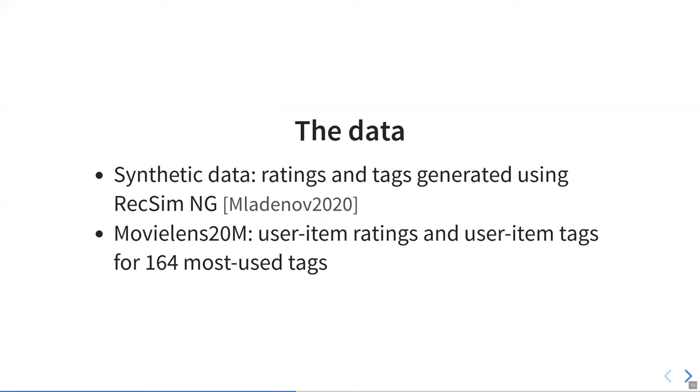Data that we use to evaluate this idea is synthetic data generated using RecSim engine, where we generated ratings and tag data and learned embeddings for those. And also MovieLens 20 million, where we have user item ratings as well as user item tags. We filtered these to the 164 most used tags, because frankly, a lot of MovieLens tags are needlessly specific and also preference irrelevant. There are users who have spent a lot of time tagging movies with like DVD or something, which in this case would confound our results.